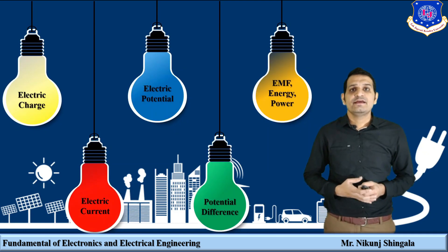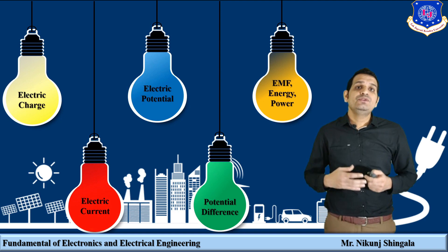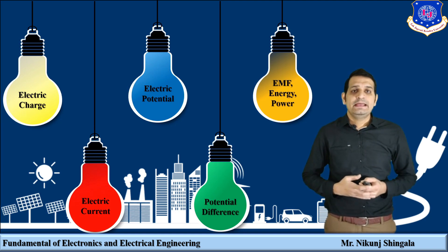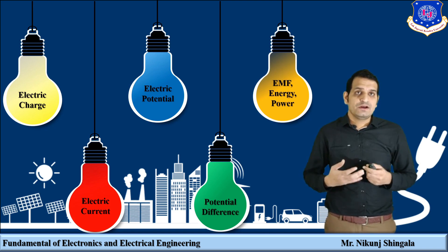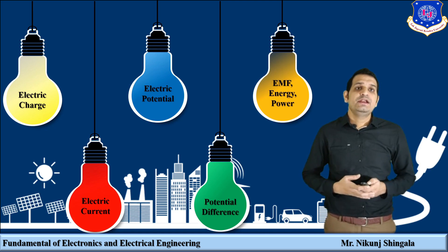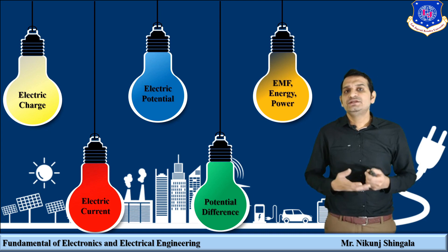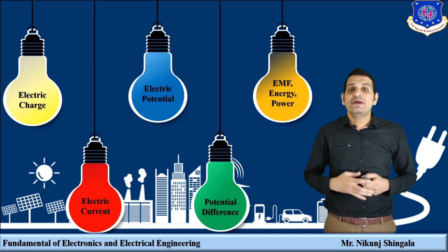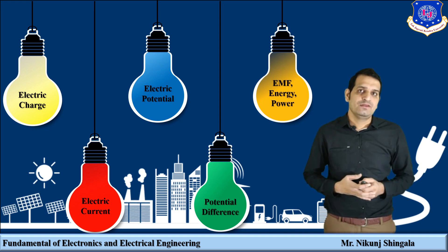The answer is it can be converted into other forms of energy. Also, there are many ways to generate electric energy from other sources. After generation, it can be easily transmitted and distributed. So it has many advantages over other forms of energy, and that is why it is widely used compared to the other forms of energy.